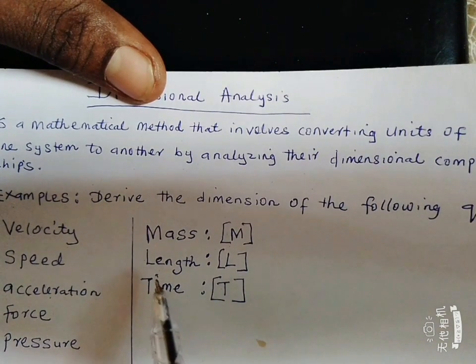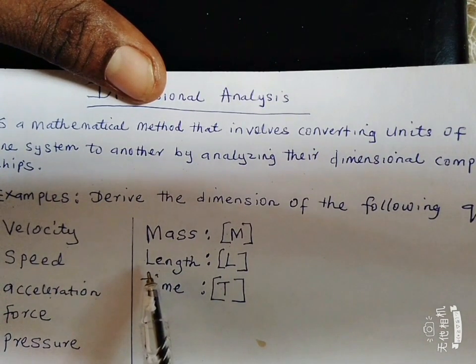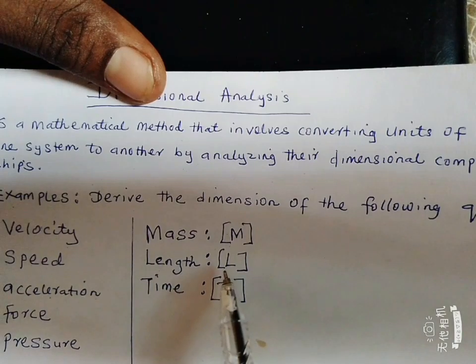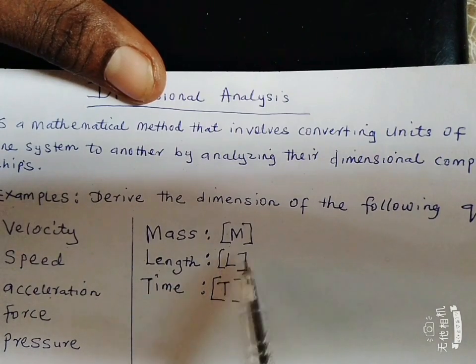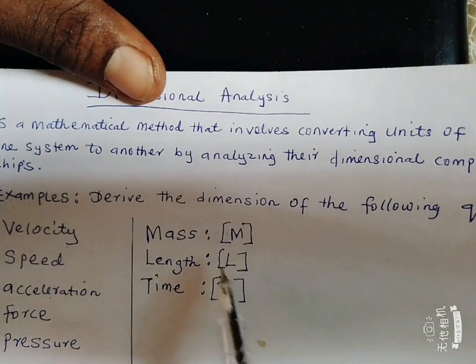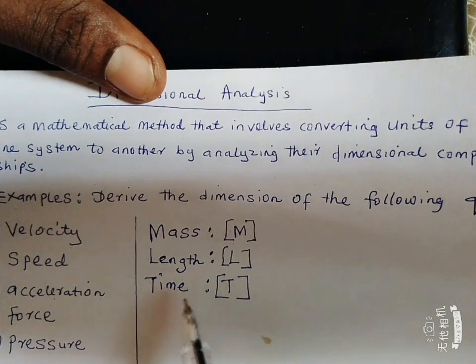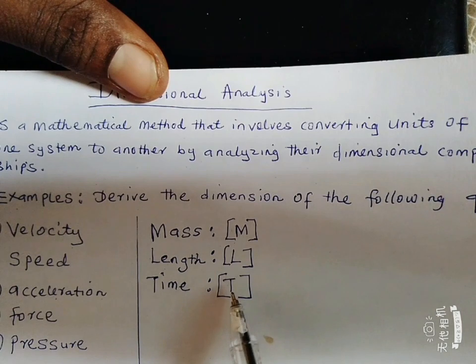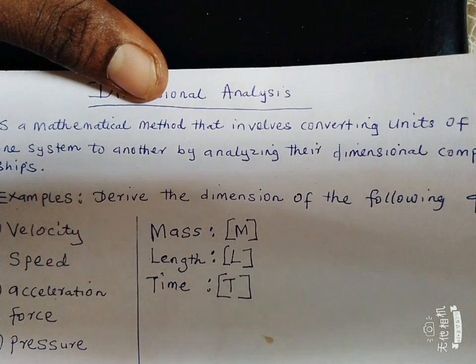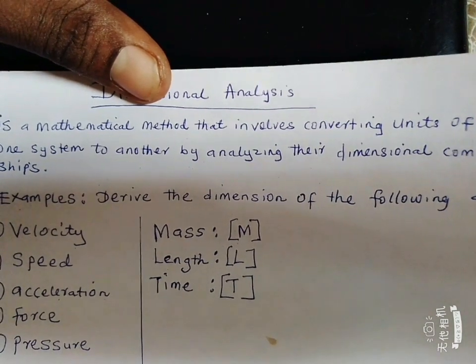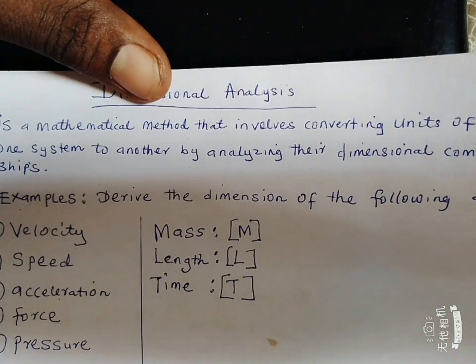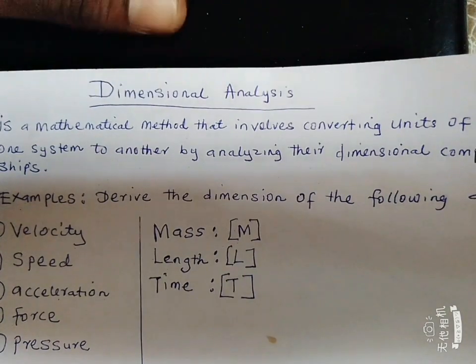Another basic quantity is the one known as length. The third one is time. You still enclose it in capital letter by the first letter T.